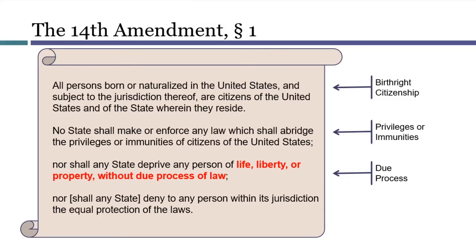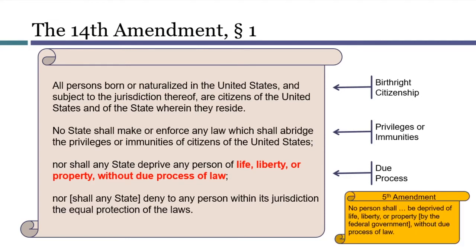By contrast, the next two clauses in Section 1 have had a huge impact on today's constitutional law. The first of these is the Due Process Clause, which limits the ways in which a state might deprive people of life, liberty, or property. This language will seem familiar because a virtually identical Due Process Clause was part of the Fifth Amendment, which was ratified in 1791. The difference is that the Fifth Amendment said that the federal government must respect due process rights, while the 14th Amendment imposed that obligation on the states. Because states did much more legislating at this time, extending it to the states had a much greater impact than the Fifth Amendment Due Process Clause ever had.